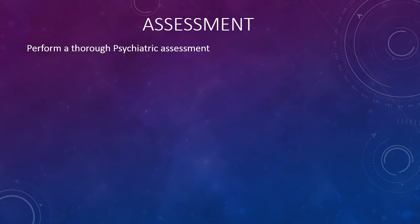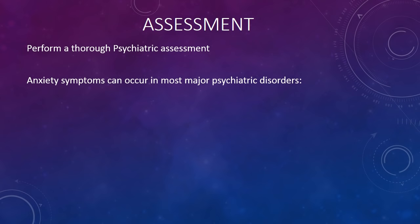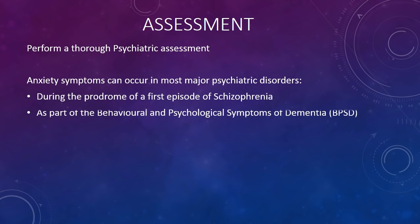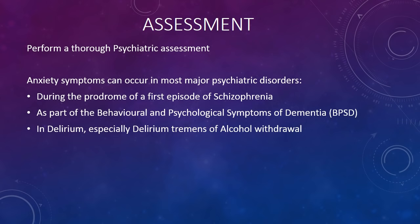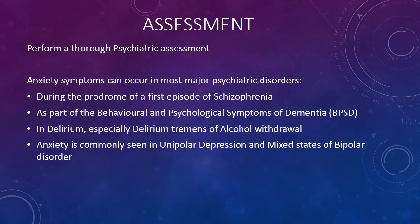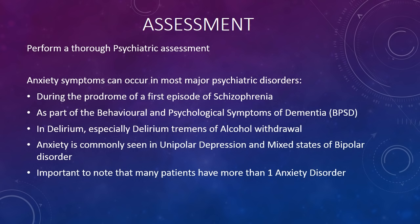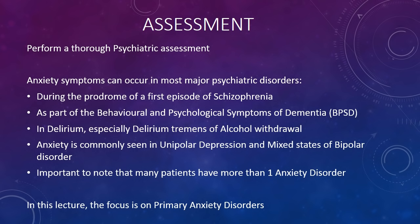We will now move on to assessment. It is important to perform a thorough psychiatric assessment, as anxiety symptoms can occur in most major psychiatric disorders — during the prodrome of a first episode of schizophrenia, as part of the behavioral and psychological symptoms of dementia, in delirium (especially delirium tremens of alcohol withdrawal), and in unipolar depression and mixed states of bipolar disorder. It is important to note that many patients have more than one anxiety disorder. The focus of this lecture is on primary anxiety disorders and not on anxiety that occurs as a symptom of other disorders.